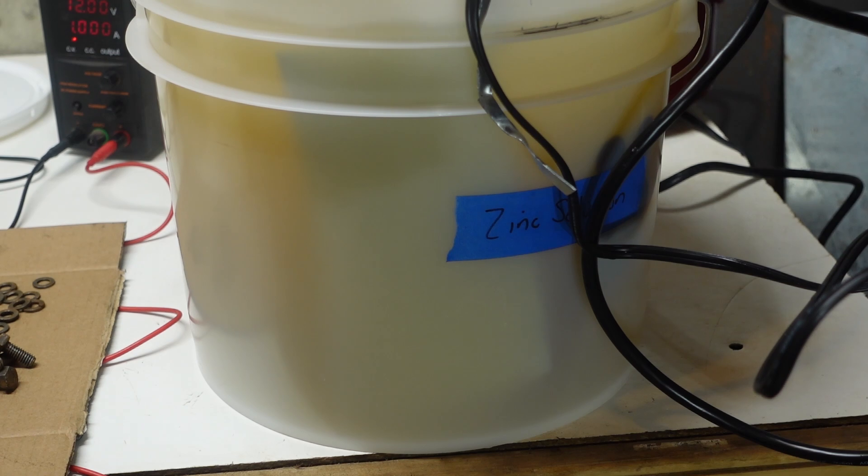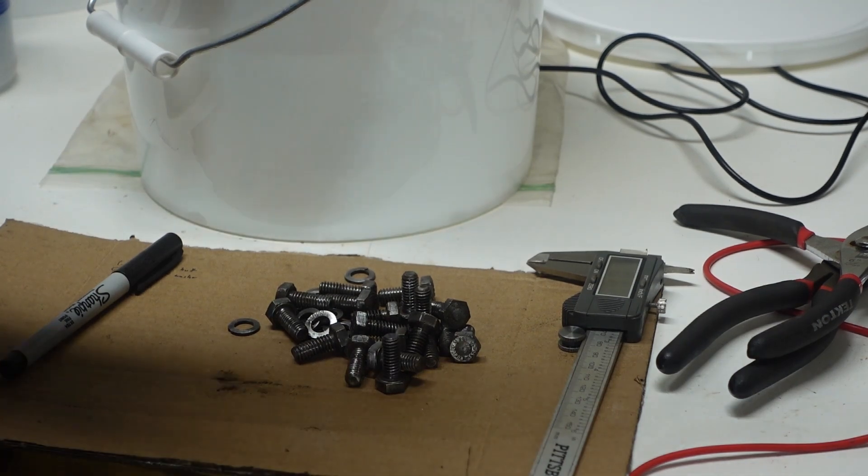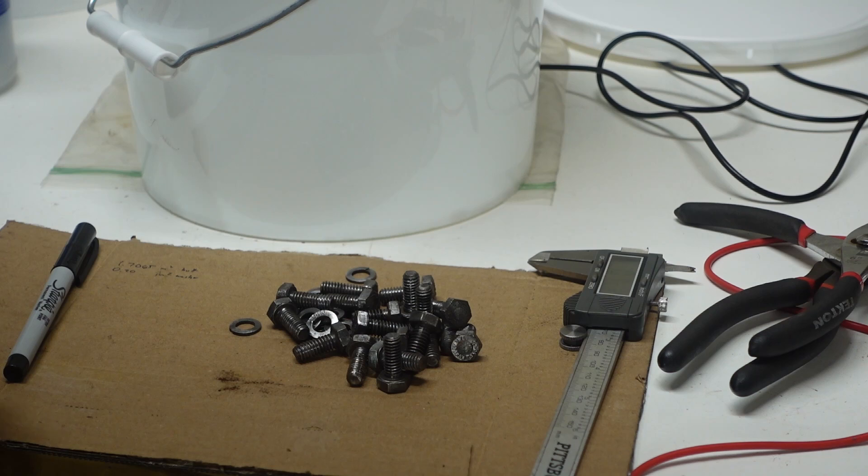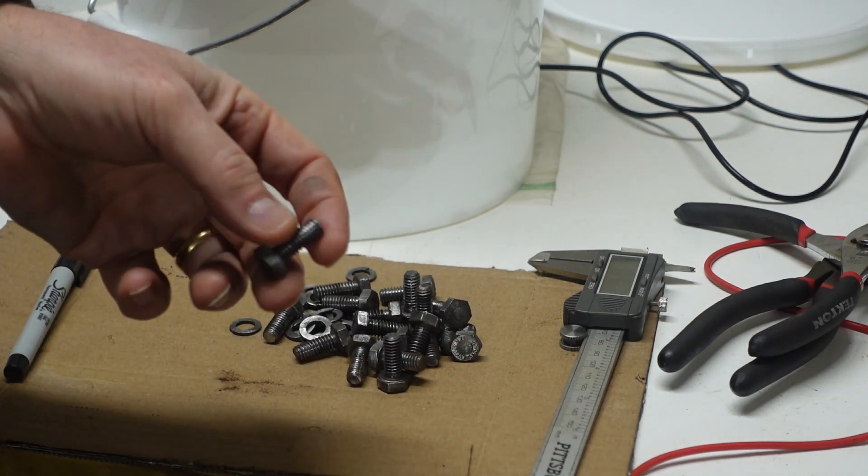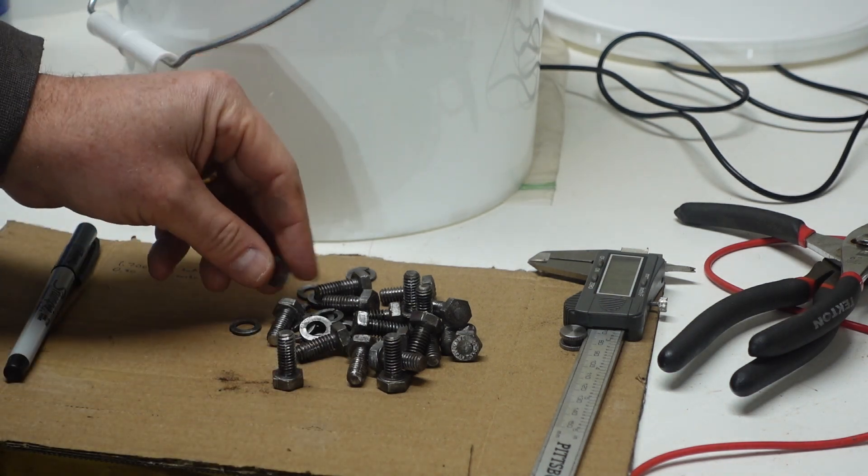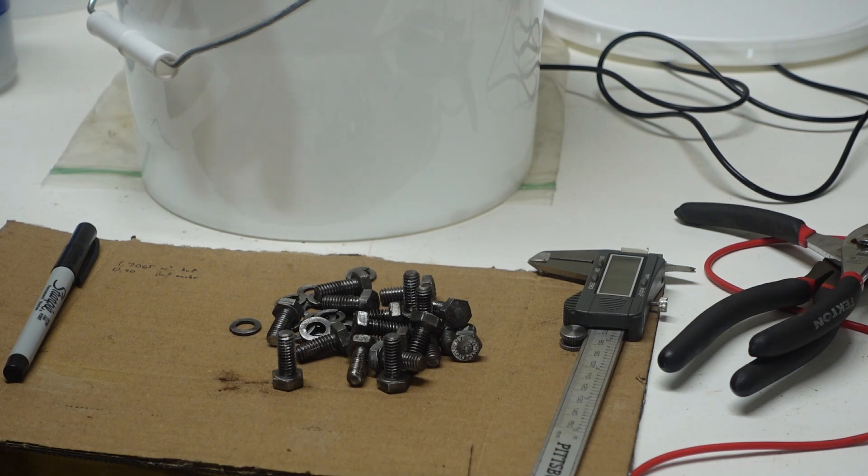And then we'll get them in the degreaser. And while they are degreasing, we're going to go ahead and calculate how much current and all that kind of stuff that I need to make this stuff work. The solution over here is still solutionating. The zinc anodes are in there and pickling a little bit. I don't have current hooked up to anything yet, but the pump seems to be holding on so far and the heater is working just fine. It's about 110 degrees or so, which is just about perfect.